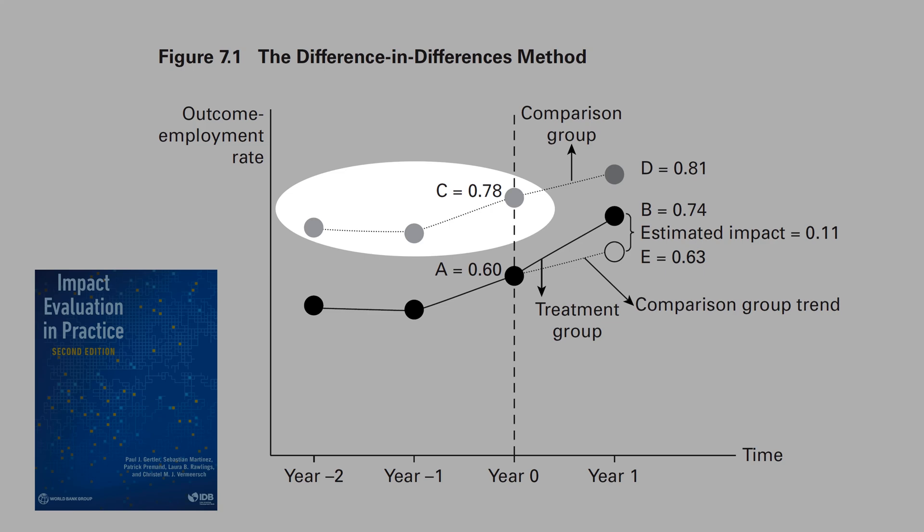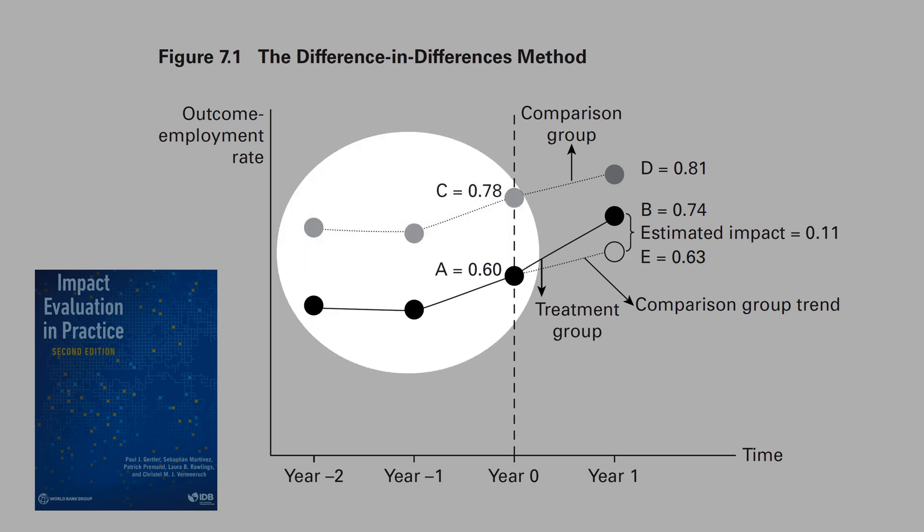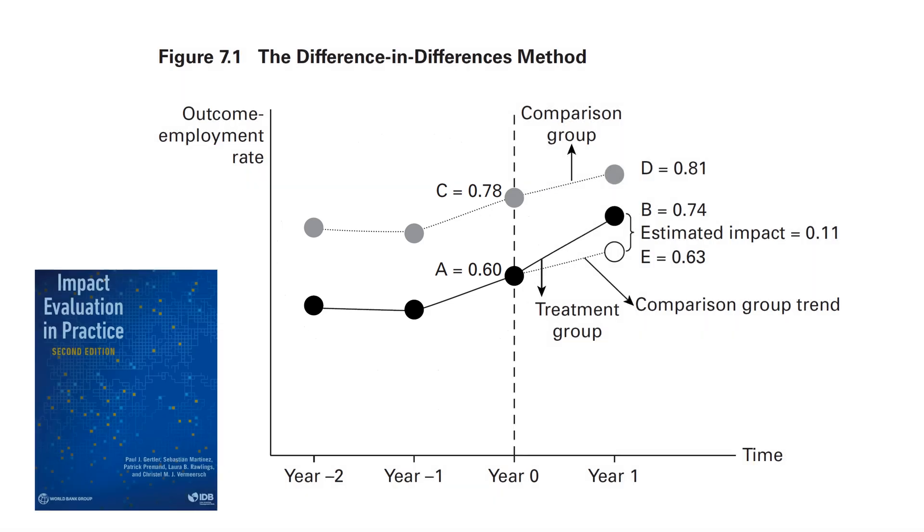The gray dots are the control group, and the black dots are the treatment group. This is an example of the common trend assumption, or parallel trend assumption.